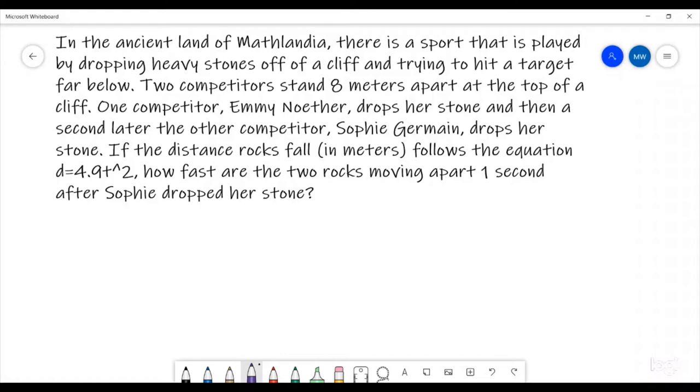If the distance the rocks fall in meters follows the equation 4.9t², where t is in seconds after you've dropped it, how fast are the two rocks moving apart after one second, one second after Sophie dropped her stone?